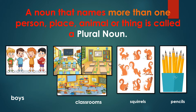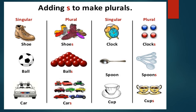So children, boys, classrooms, squirrels and pencils are all plural nouns. A singular noun changes into plural nouns in many ways. But dear children, in this class you are going to learn very few rules about it. Our first rule is: we add S to form the plural of most naming words which are singular — we add S at the end to make it into plural form.